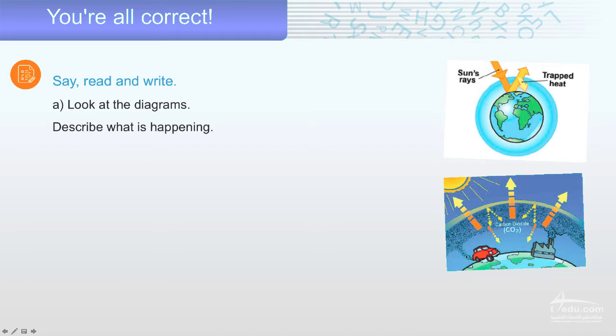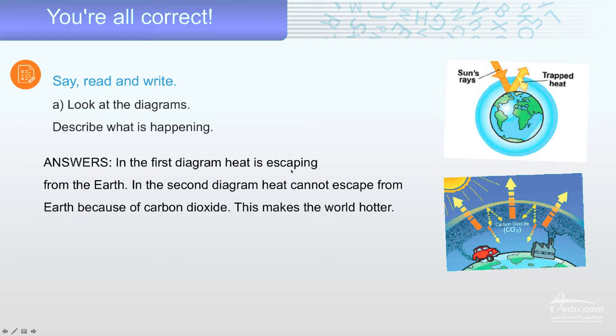What's happening? It's a car. It's smoke. Carbon dioxide, CO2. What's happening? Let's see. In the first diagram, heat is escaping from the earth. Like this one. Some rays come to the earth and heat. Some of it escape, and some of it trapped.